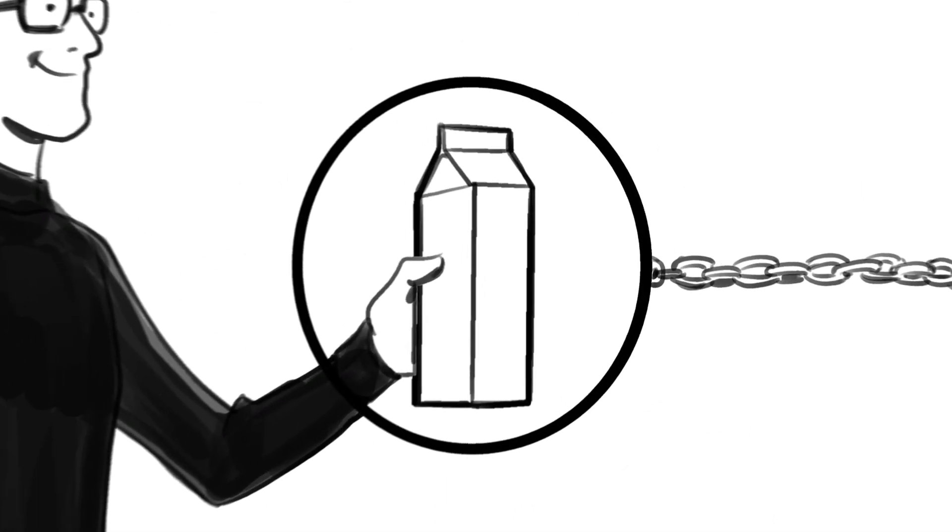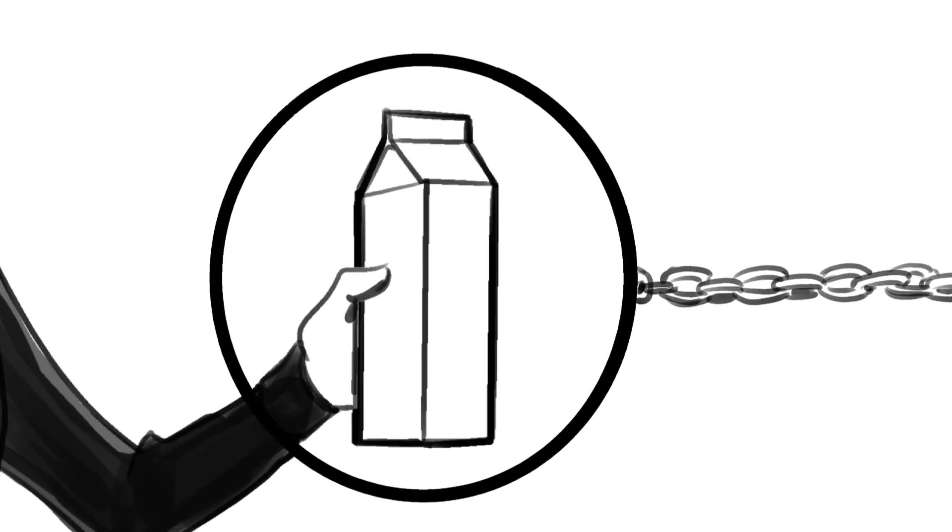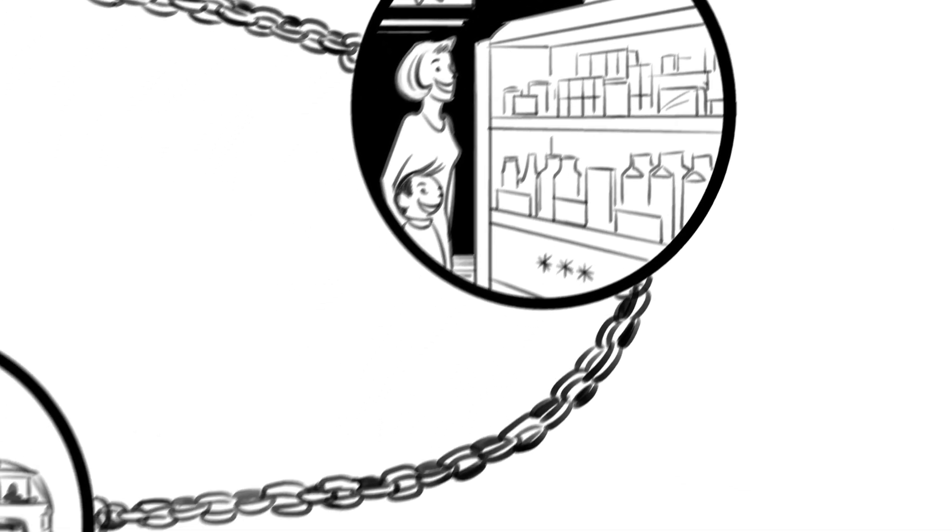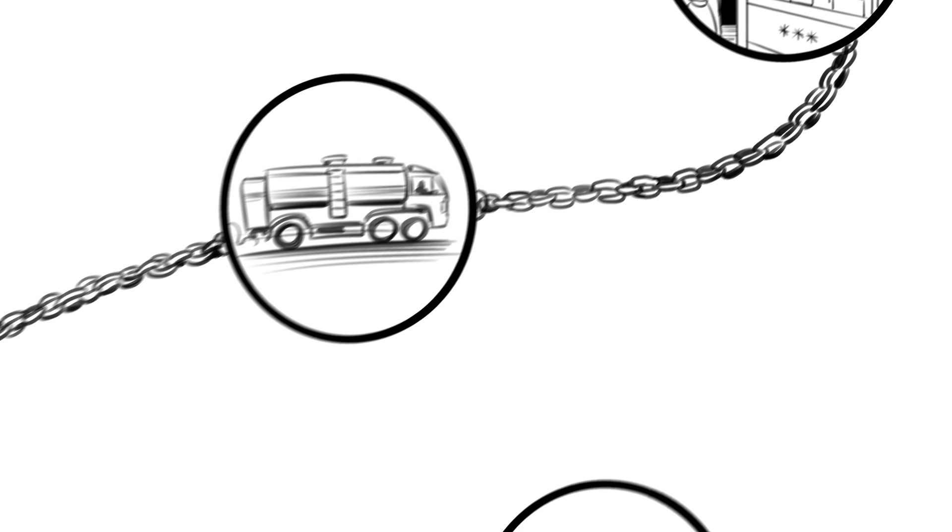Chilled and frozen foods undergo a series of cooling processes during their journey from the point of origin to the consumer's refrigerator. This is often referred to as the cold chain.